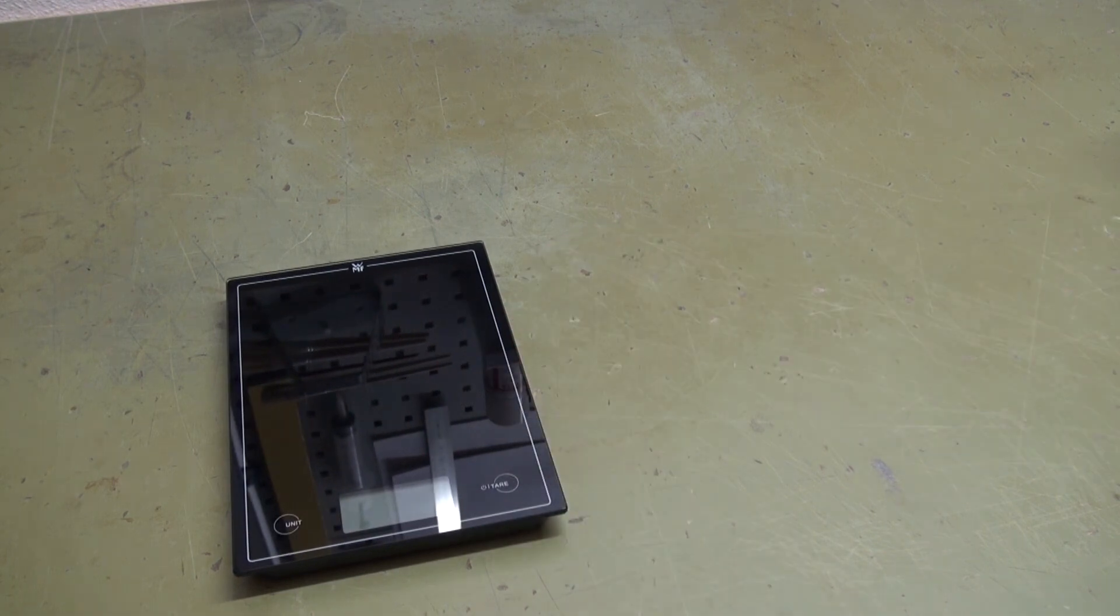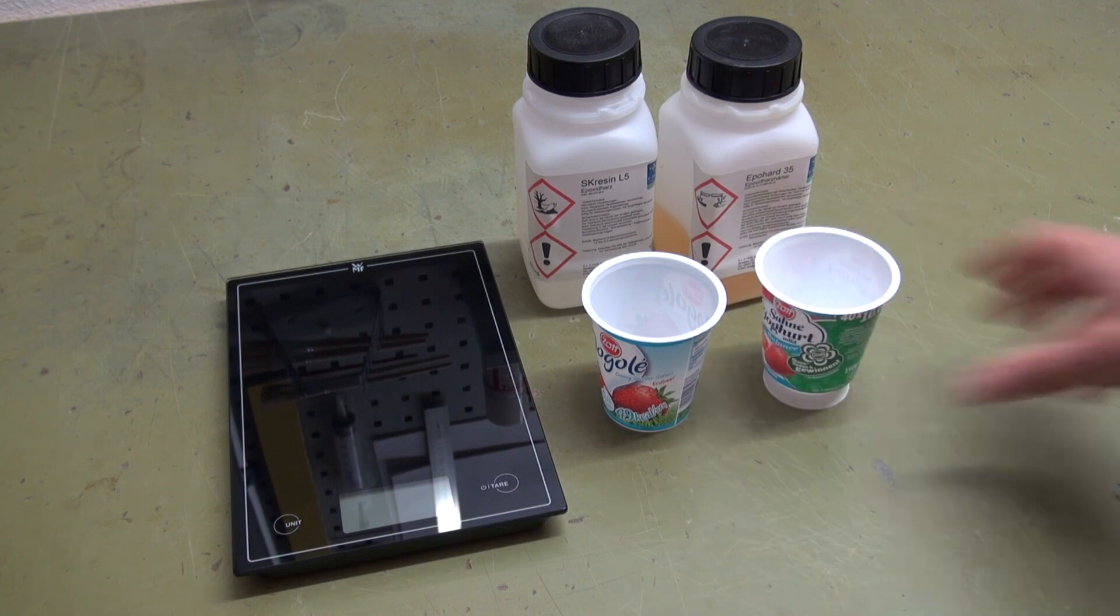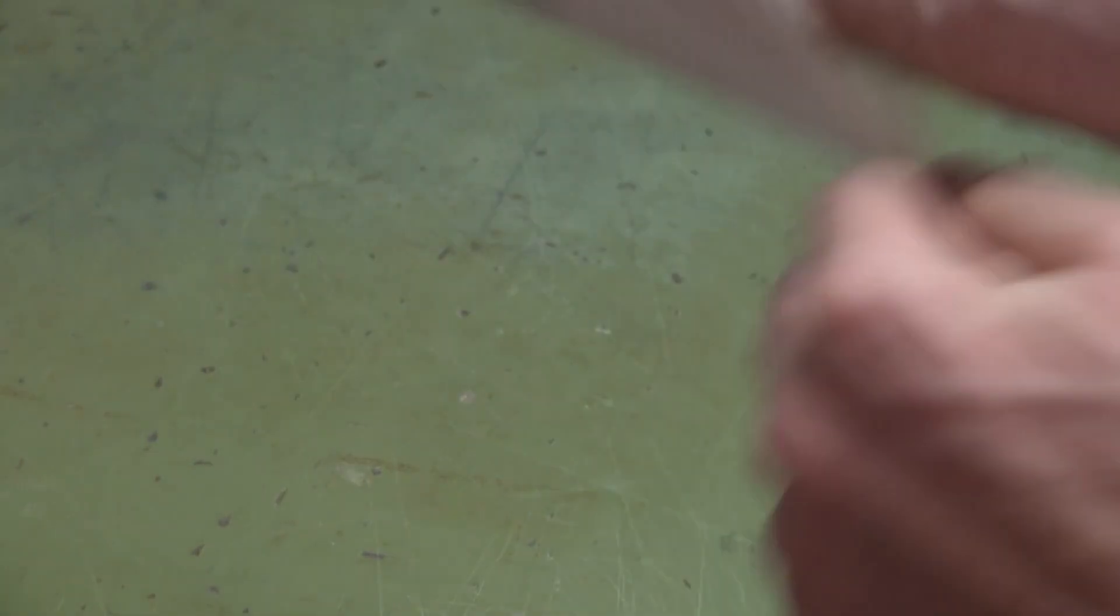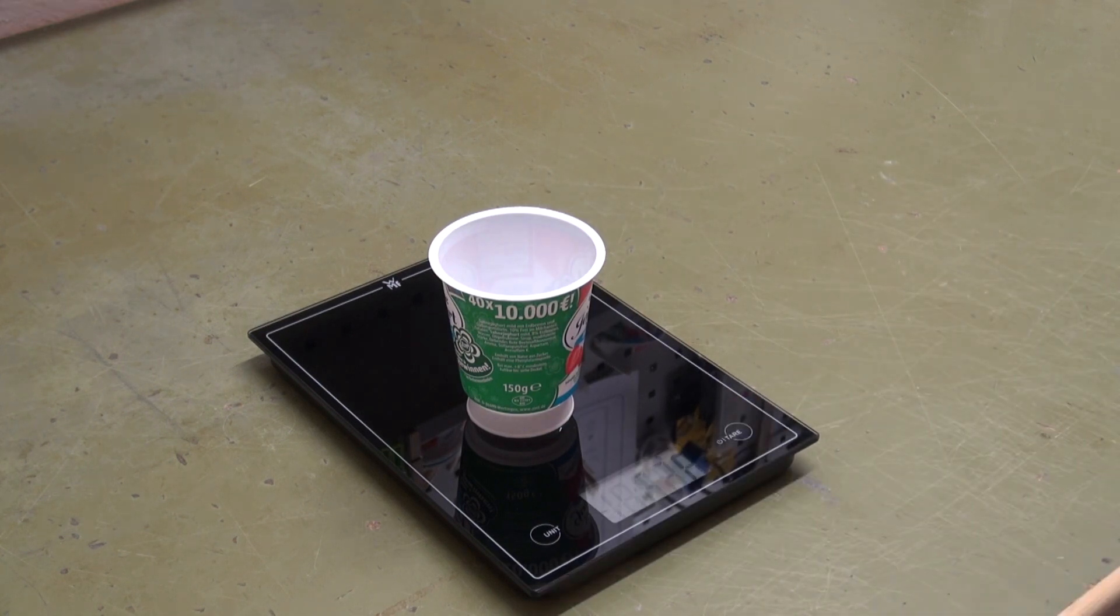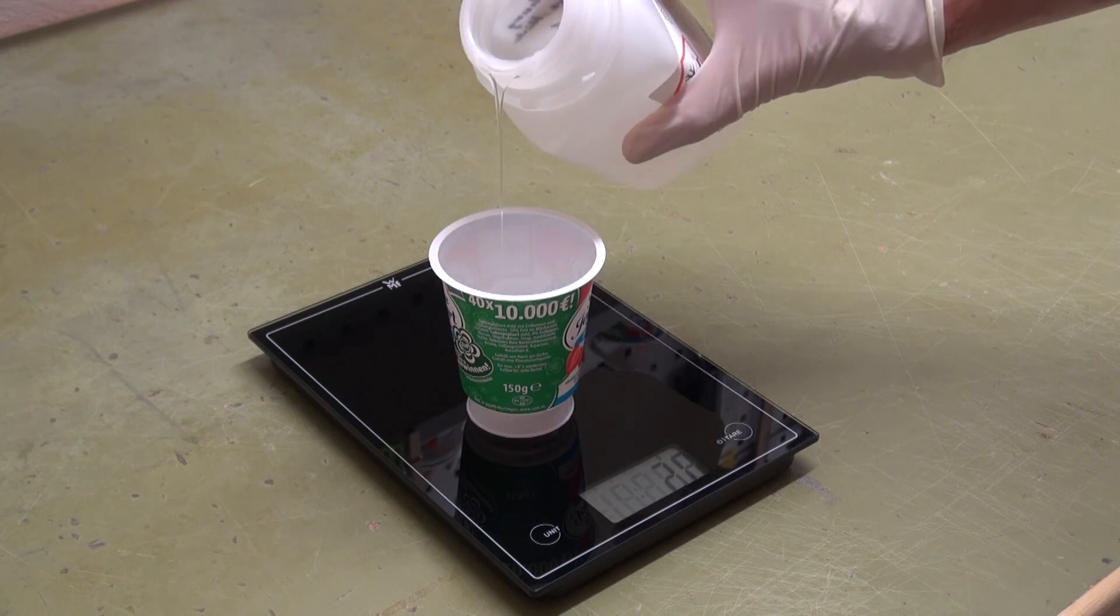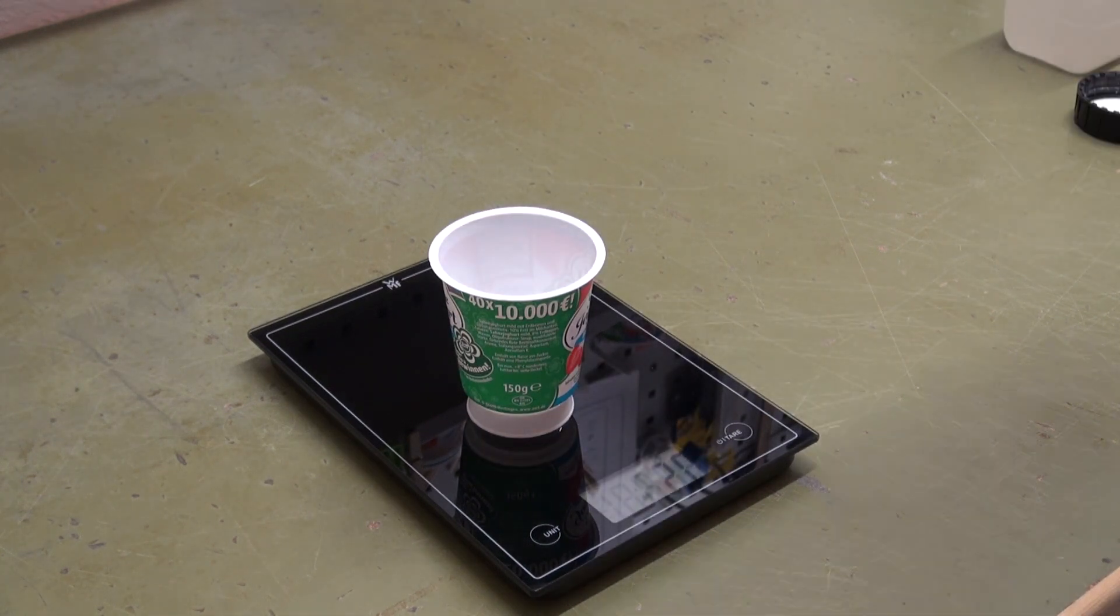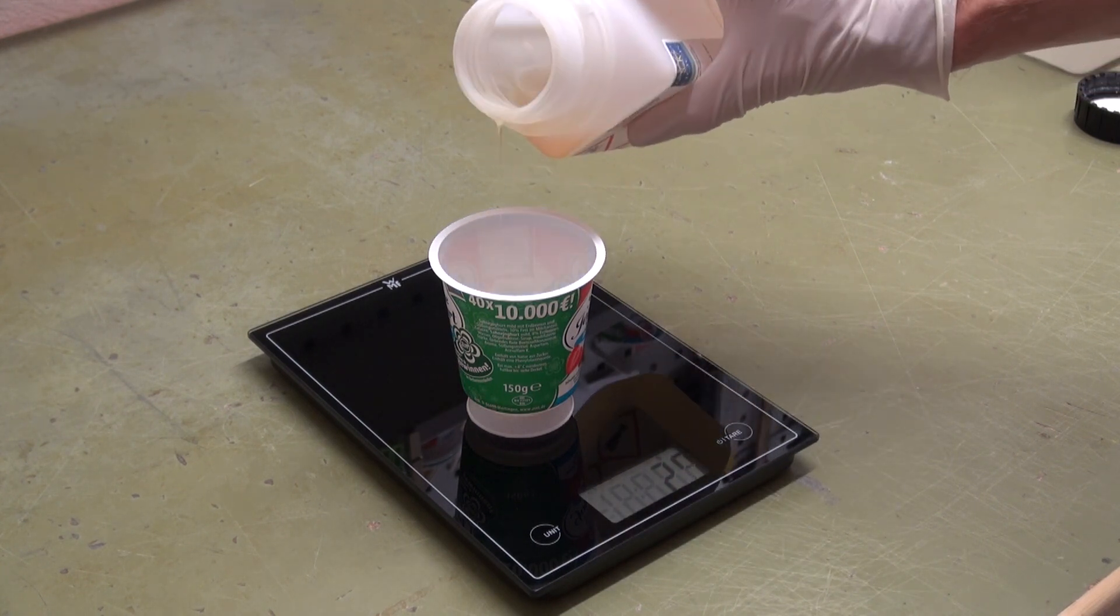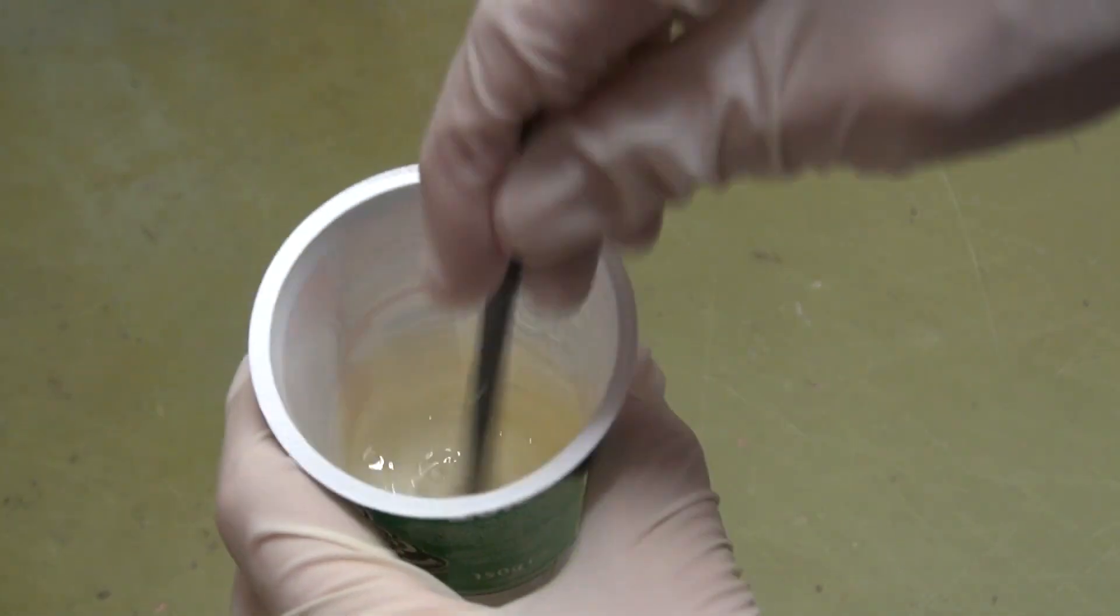Now it's time to mix the epoxy resin. You will need two yogurt pots or plastic cups, whatever you have. Epoxy resin is toxic, so be sure to wear protective gloves and follow the product safety instructions. Ensure a good ventilation of your room or use a protective mask. You will need about 30 grams of epoxy resin. Mix resin and hardener in the correct ratio according to the specs of your product. Carefully mix resin and hardener.